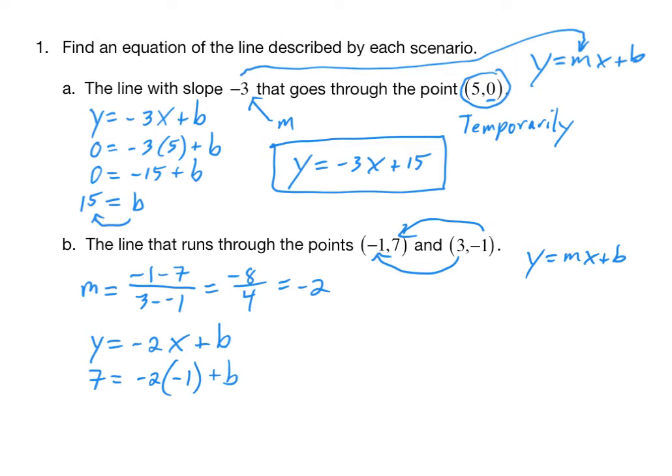And now you have an equation with just b in it, so you can solve for that variable b. We've got 7 = -2 times -1 is 2. And then of course, if you subtract 2 from both sides, you get b = 5. Putting it all back together, we have our equation is y = the m value is -2 times x plus the b value is 5. This line goes through the two points, (-1,7), and (3,-1).